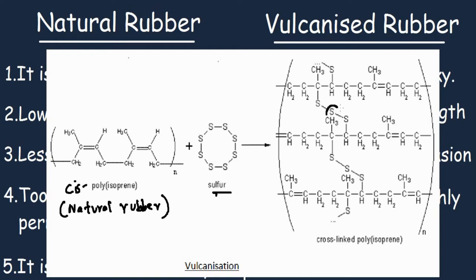These inter-cross-links are formed, and these are the reasons why vulcanized rubber is elastic. Vulcanized rubber is more elastic than natural rubber due to these sulfur-sulfur cross-links which are formed between the carbon atoms.